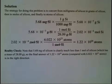The strategy for doing this problem is to convert milligrams of silicon to grams of silicon. Then, once we're in grams of silicon, we can use the molar mass of silicon to identify how many moles of silicon we have. Once we have the number of moles of silicon, we can use Avogadro's number to convert that into a number of atoms of silicon.